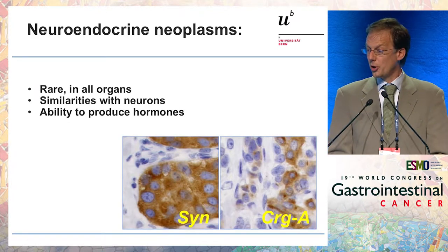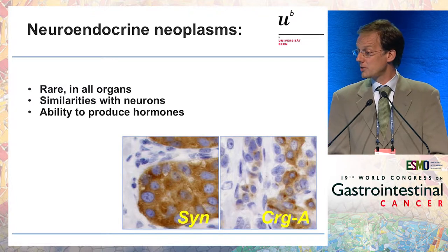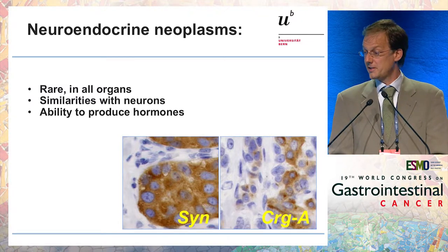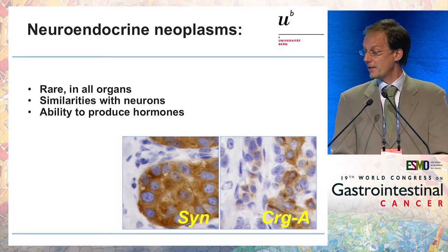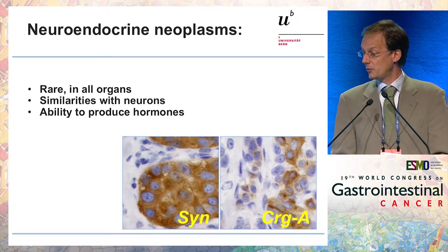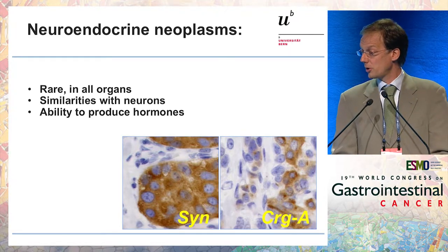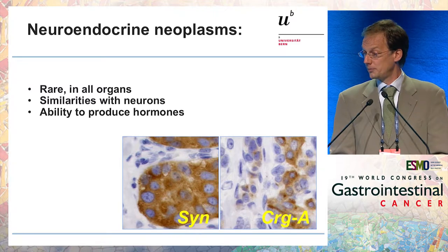As you all know, neuroendocrine tumors are diagnosed due to their neuronal phenotype, similarities with neurons, which we demonstrate as pathologists by the expression of synaptophysin and chromogranin A, which can also be used as a biomarker — a circulating biomarker.